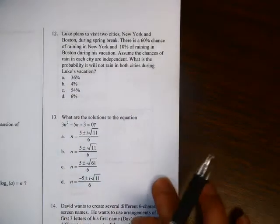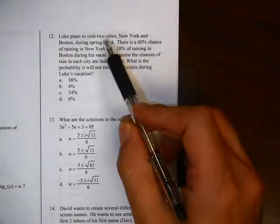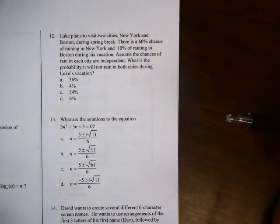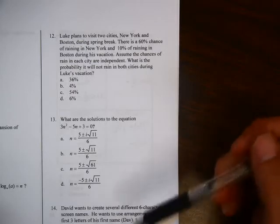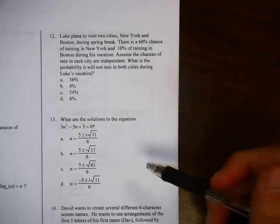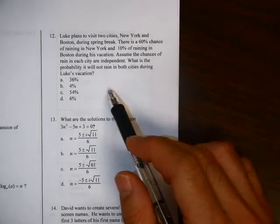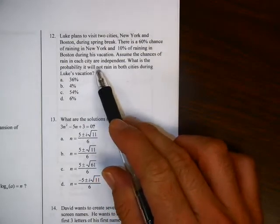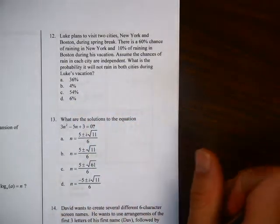Number 12, we'll go ahead and read it first. Luke plans to visit two cities, New York and Boston, during spring break. There is a 60% chance of raining in New York and 10% chance of raining in Boston during his vacation. Assume the chances of rain in each city are independent. What is the probability that it will not rain in both cities during Luke's vacation?